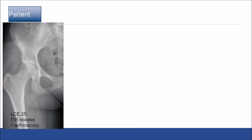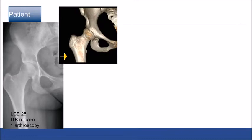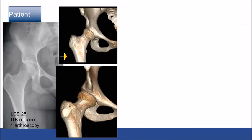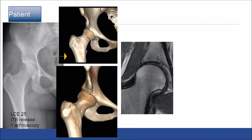Here's another example with an LCE of 25 degrees. This patient had an IT band release and one prior hip arthroscopy. There is a fairly horizontal joint, but the posterior wall is very vertical with very subtle posterior lateral instability. The CT scan shows fairly good anterior coverage, but posterior-superior laterally the rim moves away in that position, with very poor capsular integrity. This patient had an anteversion PAO.